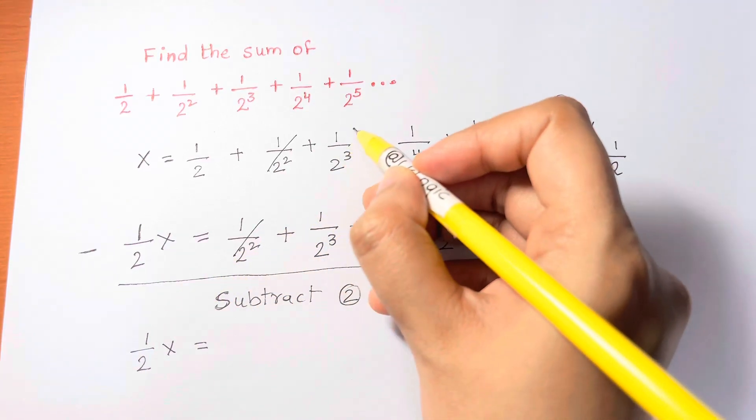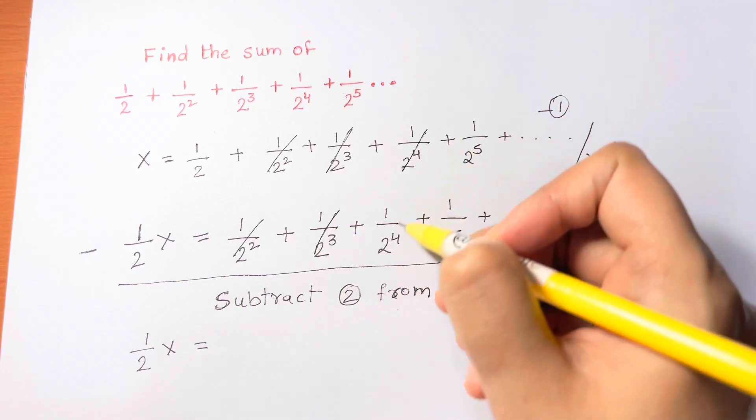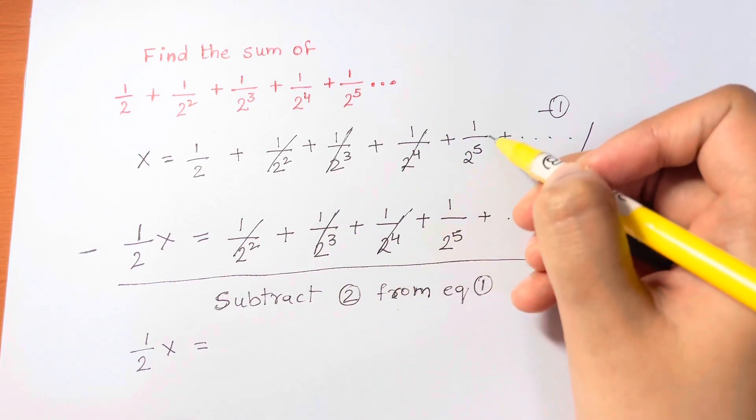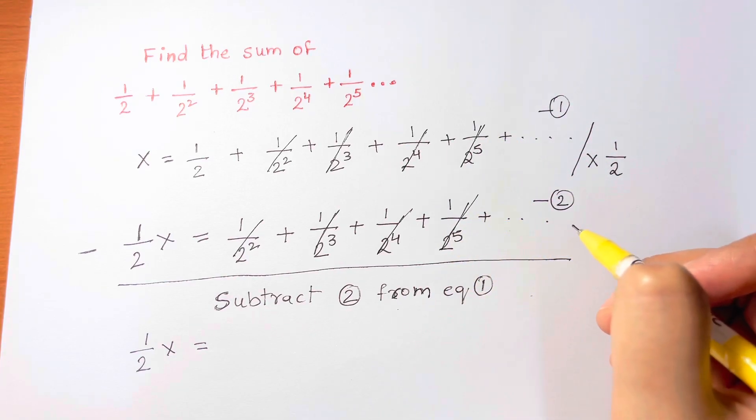1 over 2 4th minus 1 over 2 4th, 1 over 2 fifths minus 1 over 2 fifths and so on, and it gets cancelled. So you are only left with half.